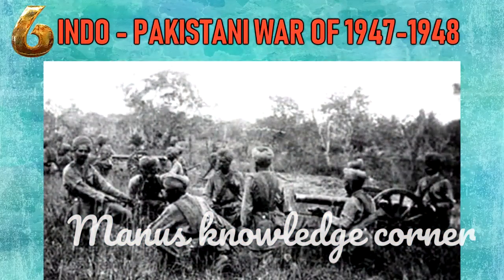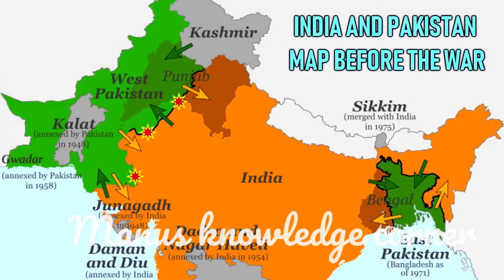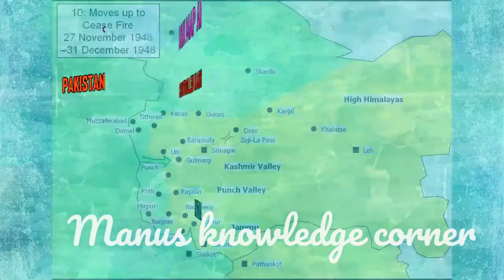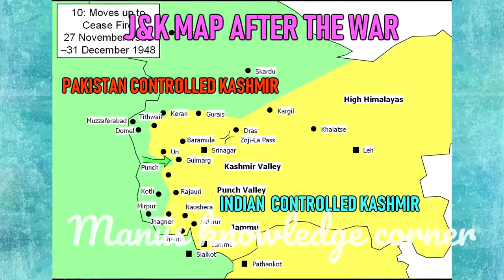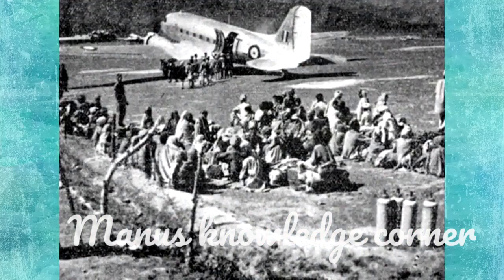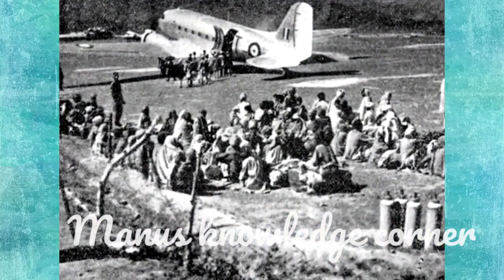Number six: the Indo-Pakistani War of 1947 to 1948. This war was fought between India and Pakistan over the princely state of Jammu and Kashmir. The result was inconclusive; however, most neutral assessments agree that India was the victor, as it successfully defended about two-thirds of Kashmir, including the Kashmir Valley, Jammu, and Ladakh. The inconclusive result still affects the geopolitics of both countries.